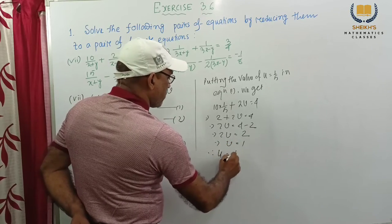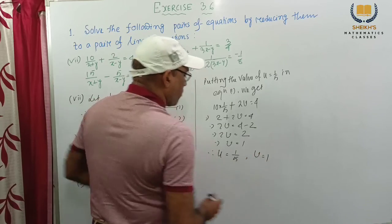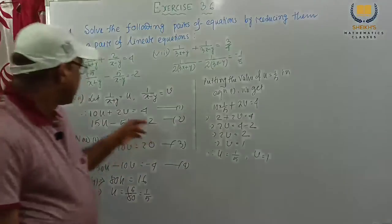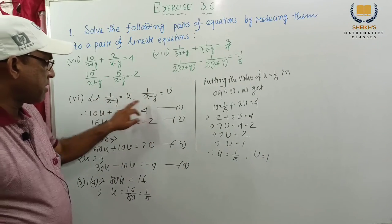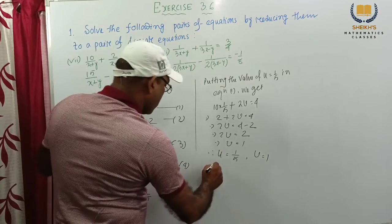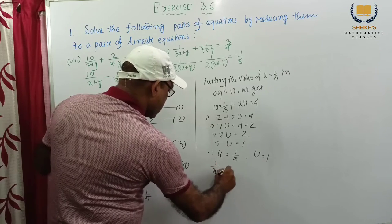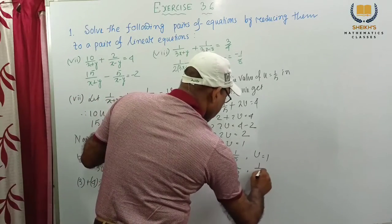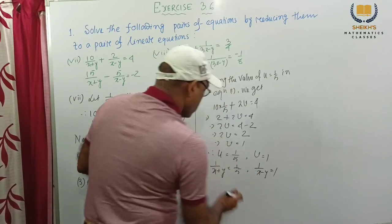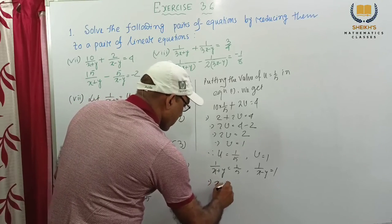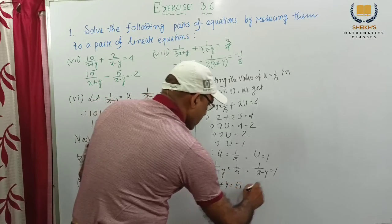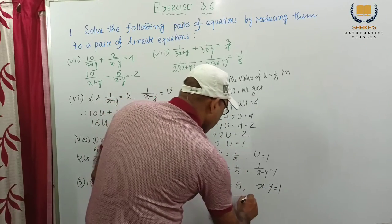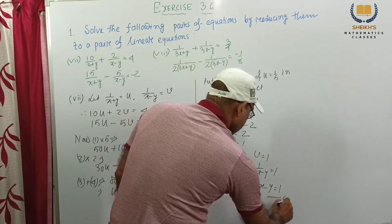But in our problem, u and v are not given. U means 1 by x plus y, v means 1 by x minus y. So putting the values: x plus y equal to 5, and x minus y equal to 1. This is equation 5, and this is equation 6. Now if we add these two equations, y and y cancel.